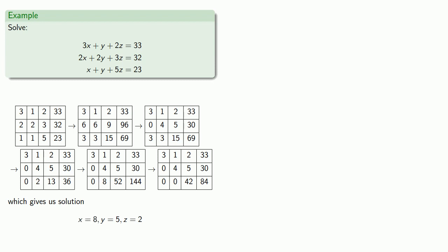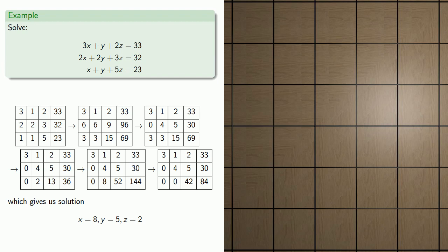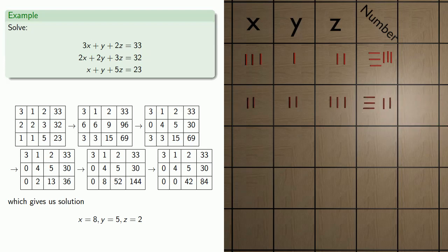So while this seems to be a cumbersome process, remember that this is actually being done on a counting board. So here's a quick view of what that might look like. We'll set up our equations. So our first equation, 3x, 1y, 2z, and 33. Our second equation, 2x, 2y, 3z, and 32. And our third equation, 1x, 1y, 5z, and 23.